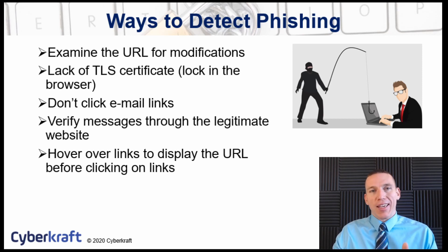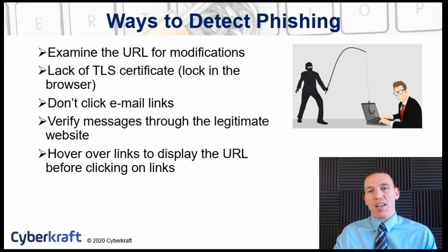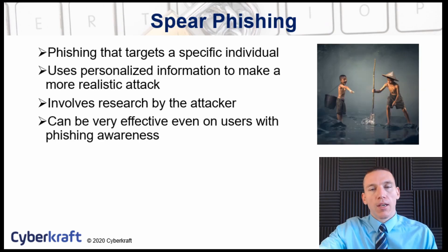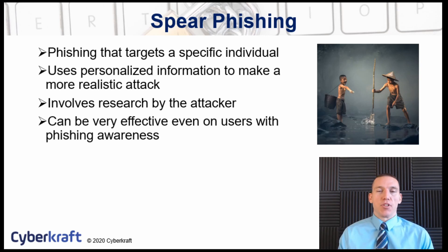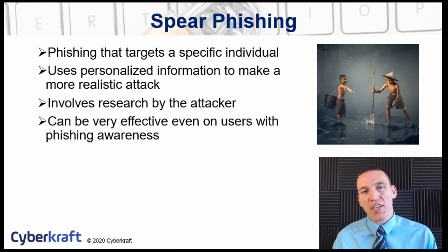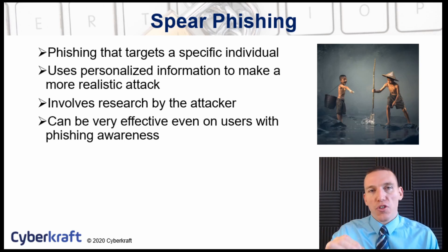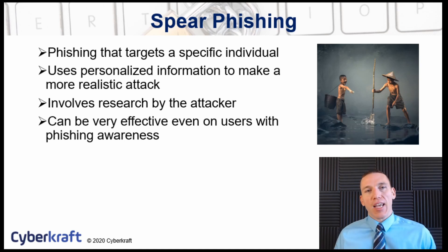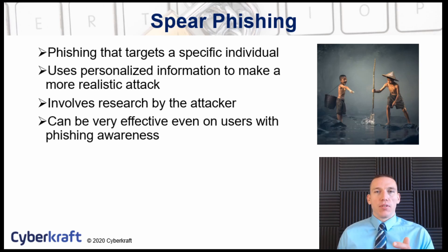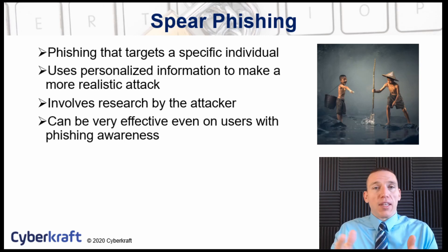Certain email clients and firewalls can help protect against phishing emails in an enterprise environment by detecting suspicious content. Now, there's phishing and then there's spear phishing. Regular phishing is sent out to many different users with the same message — like that Amazon email. A spear phishing attack is a type of email tailored to an individual, containing personalized information and details specific to that person.